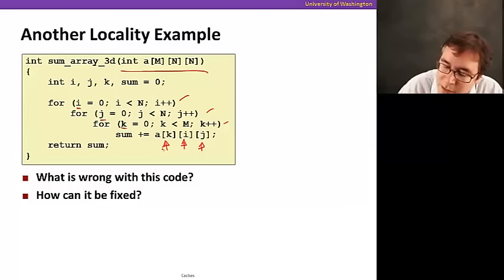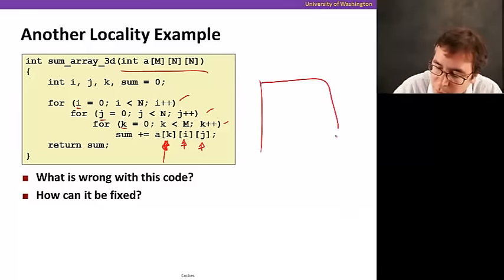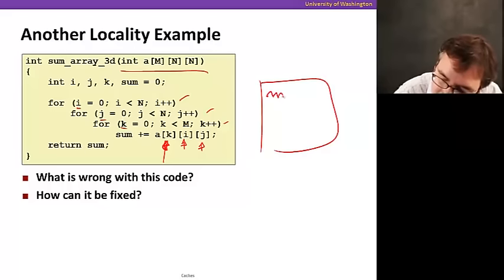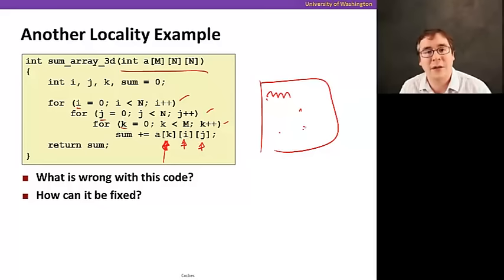But since this program here is not accessing all of the elements of a row before moving to the next one, since you see the inner loop here is varying the outermost dimension, now we're just going all over memory. Instead of reading memory one after the other here, we're going to read one place, another place, another place, another place. It's just not going to take advantage of locality, especially if the matrix does not fit in cache.